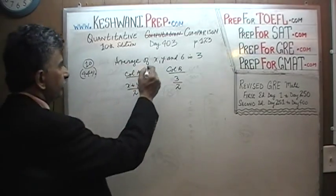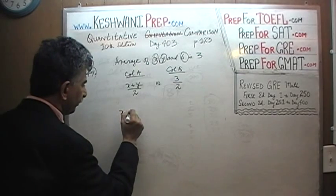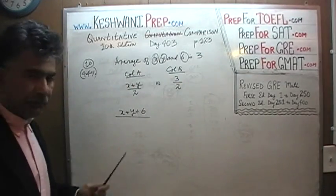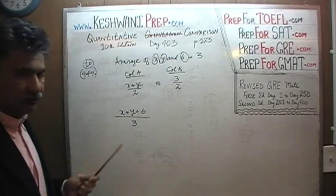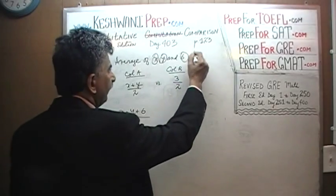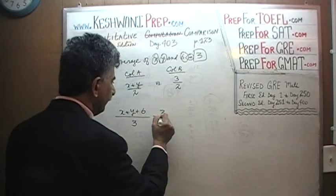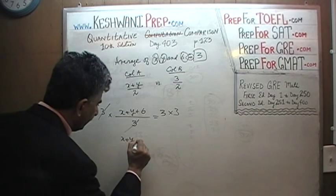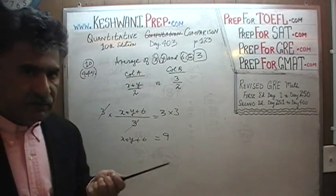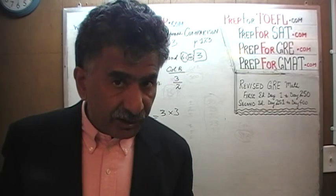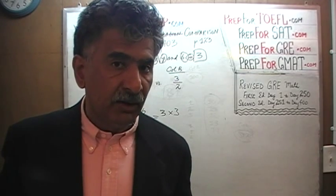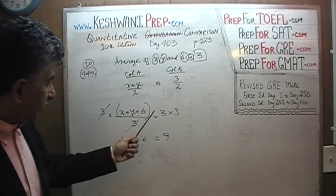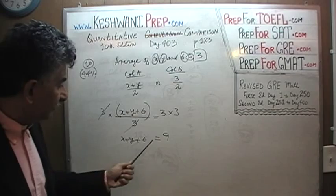Here we go. We are told the average of x, y, and 6 is 3. The sum x plus y plus 6, divided by 3, equals 3. Multiplying both sides by 3 gives x plus y plus 6 equals 9 — because if the average of 3 numbers is 3, their sum must be 9. We're not interested in the sum of all three; we want x plus y. Subtracting 6 from both sides gives x plus y equals 3.